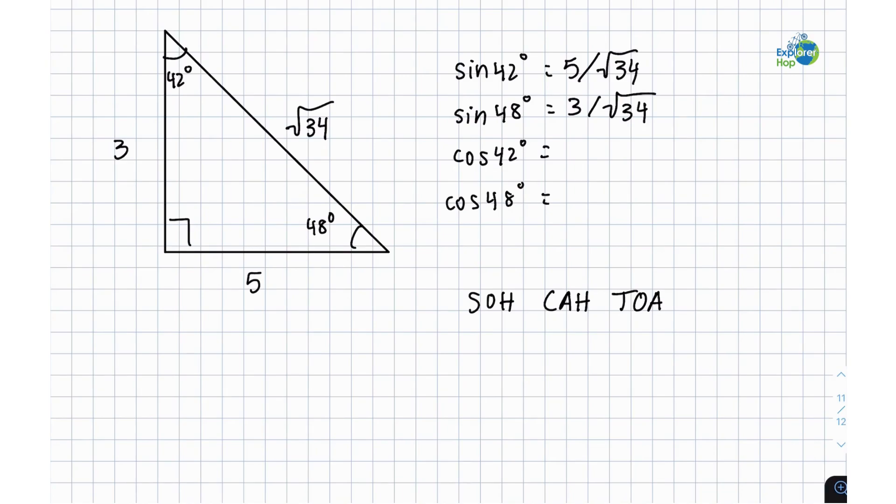Now cosine, which is adjacent over hypotenuse, is going to be different because we're not looking for the opposite side, we're looking for the adjacent side.